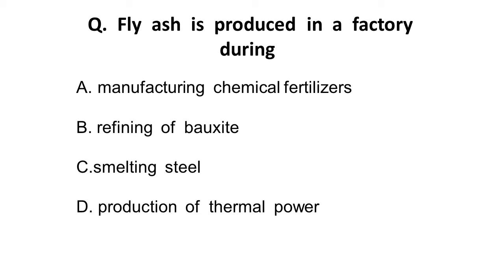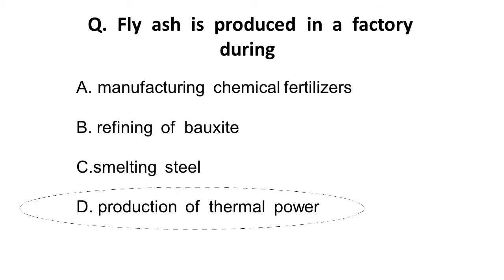Next question: Fly ash is produced in a factory during? Options are: A) Manufacturing of chemical fertilizers, B) Refining of bauxite, C) Smelting of steel, D) Production of thermal power. Fly ash is produced during coal burning, and coal is used in thermal power plants, so the correct answer is D) Production of thermal power.